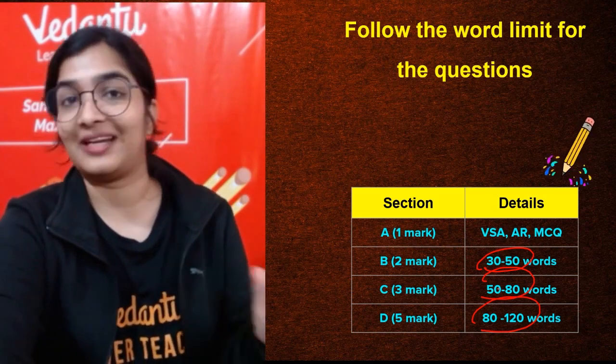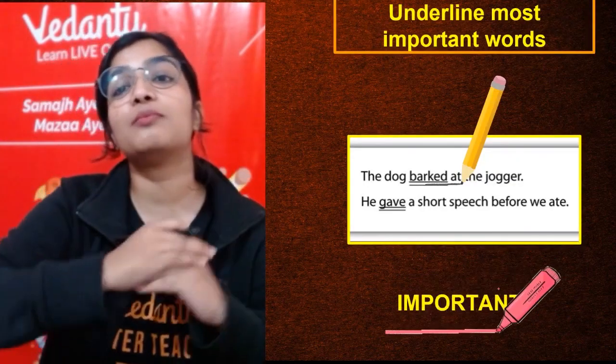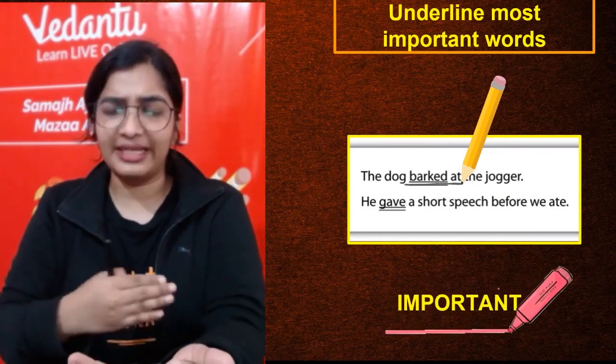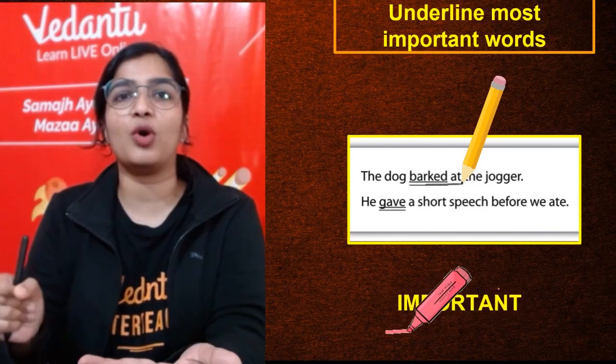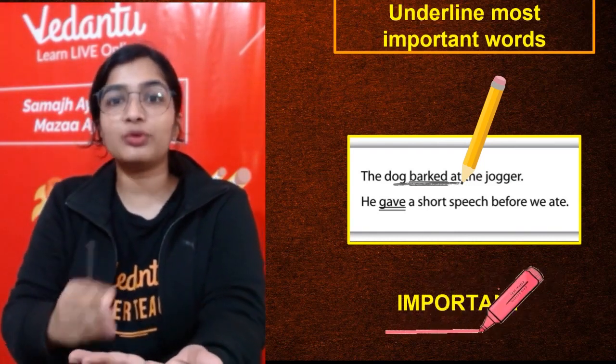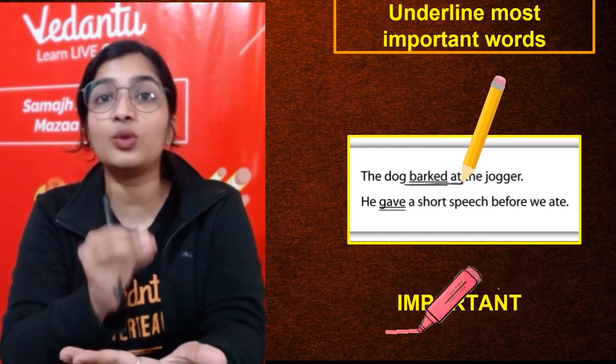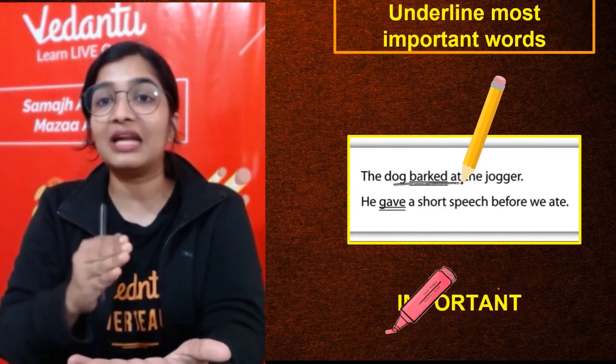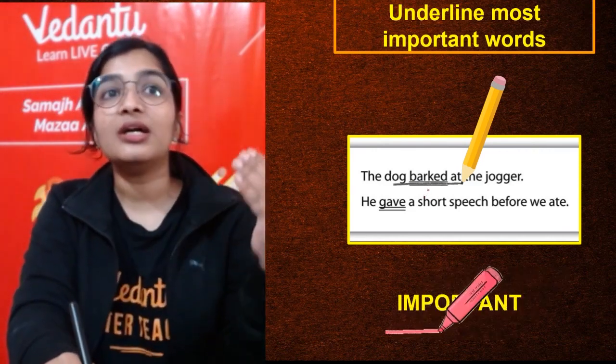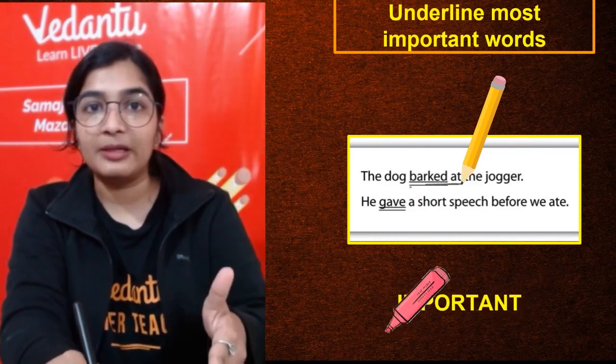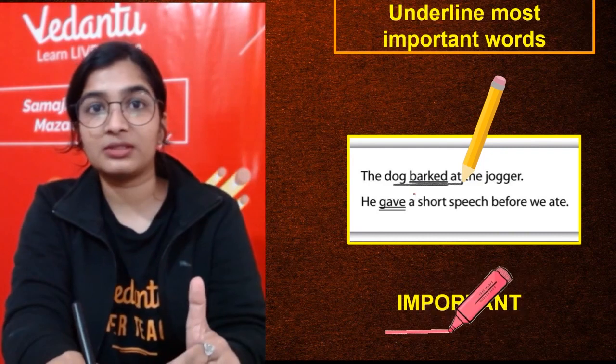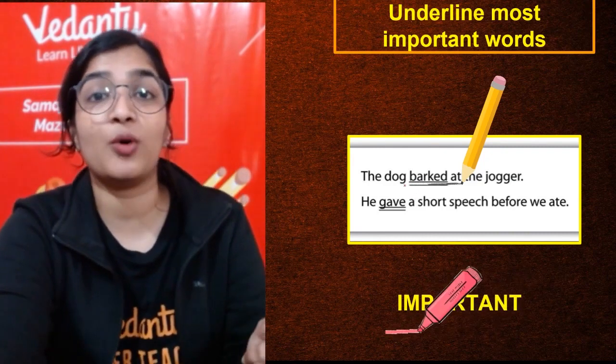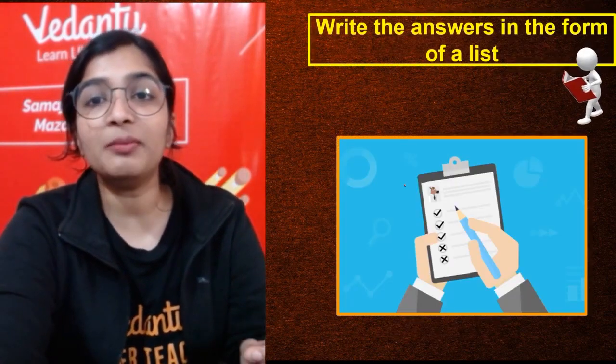Tip number four: underline most important words. Even when we are reading, we have this habit of underlining the important words, right? So that if I have to read it again, I know what to look for. If the evaluator knows what they are looking for in that particular answer, if you have underlined it, then they will have that opinion that okay, the student knows the answer. It is very important. Underline most important words. Tip number five: write the answers in the form of a list. That will be very helpful.